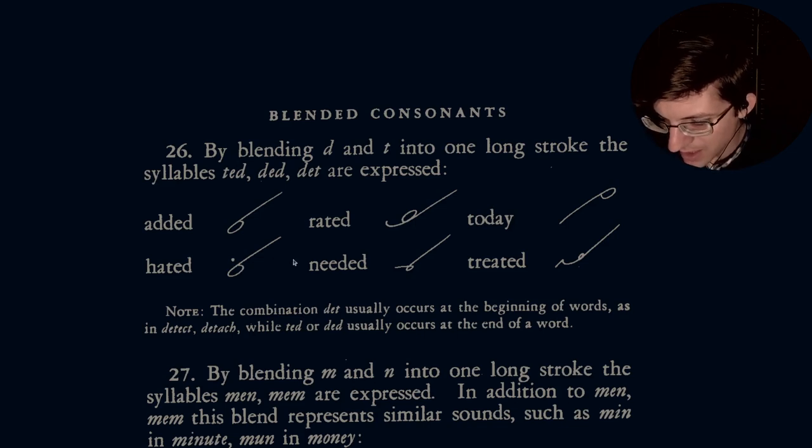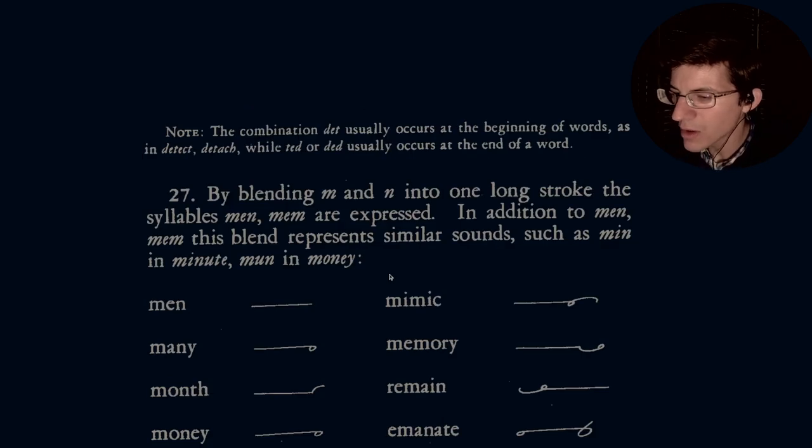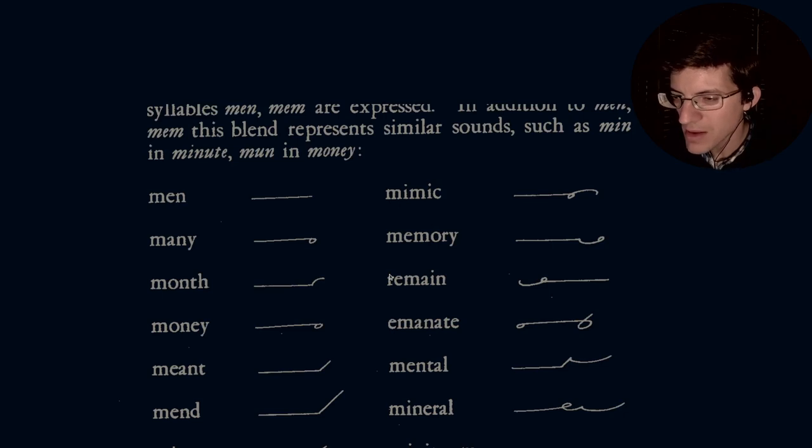27 is blending the M and N strokes. And that also will result in one long stroke, similar to our T and D strokes. So let's go ahead and read what they have for us in that section. By blending M and N into one long stroke, the syllables men, mem are expressed. In addition to men, mem, this blend represents similar sounds such as men in minute and mun in money.